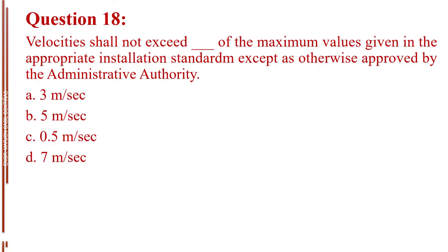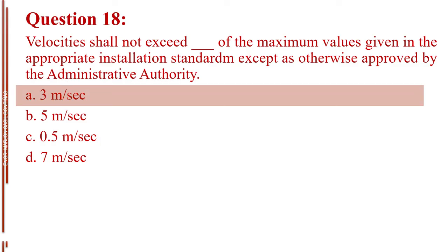Question number 18. Velocity shall not exceed blank of the maximum values given in the appropriate installation standard except as otherwise approved by the administrative authority. Letter A, 3 meters per second. Letter B, 5 meters per second. Letter C, 0.5 meter per second. Letter D, 7 meters per second. The answer is Letter A, 3 meters per second.